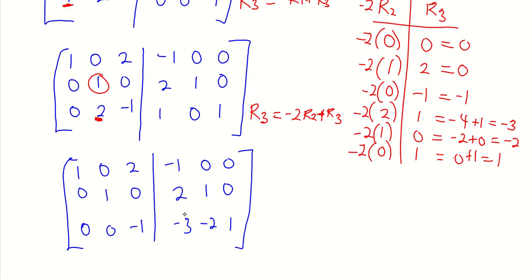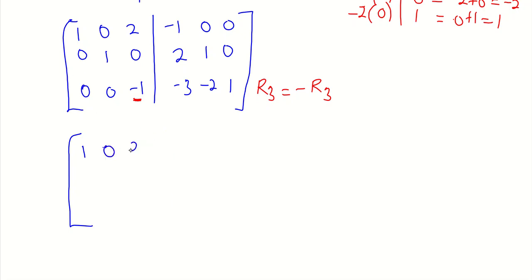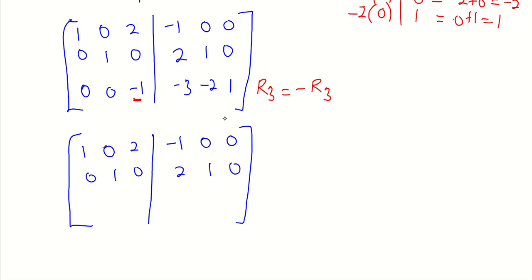Our next idea is to change this minus 1 in row 3 to 1. Since the effect is going to happen in row 3, we set row 3 equal to minus row 3. The effect does not happen in row 1 and row 2, so we maintain their same values. Row 1: 1, 0, 2, minus 1, 0, 0. Row 2: 0, 1, 0, 2, 1, 0. New row 3: 0, 0, 1, 3, 2, minus 1.